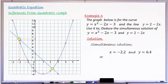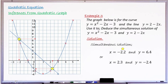At the second point of intersection, drawing lines to both axes: x ≈ 2.3 and y ≈ −2.4. So the second simultaneous solution is x = 2.3, y = −2.4. Note: if only roots were asked, you would read only the x-values at the intersection points.